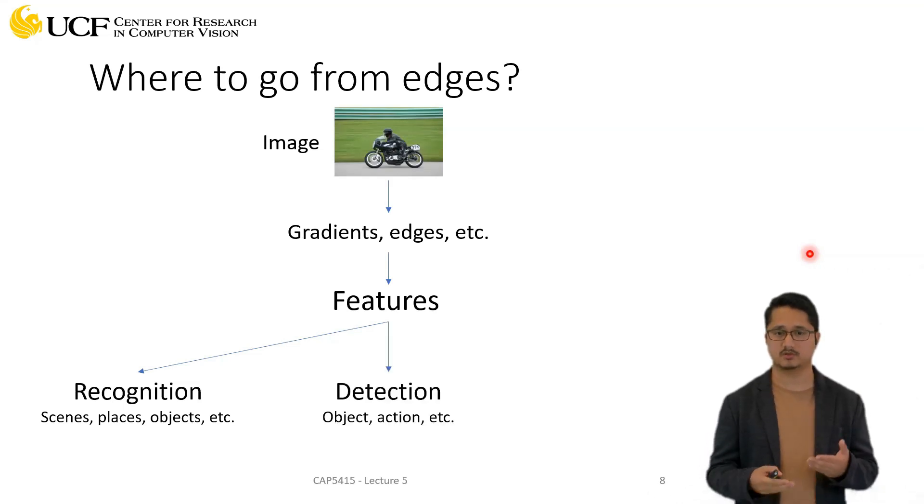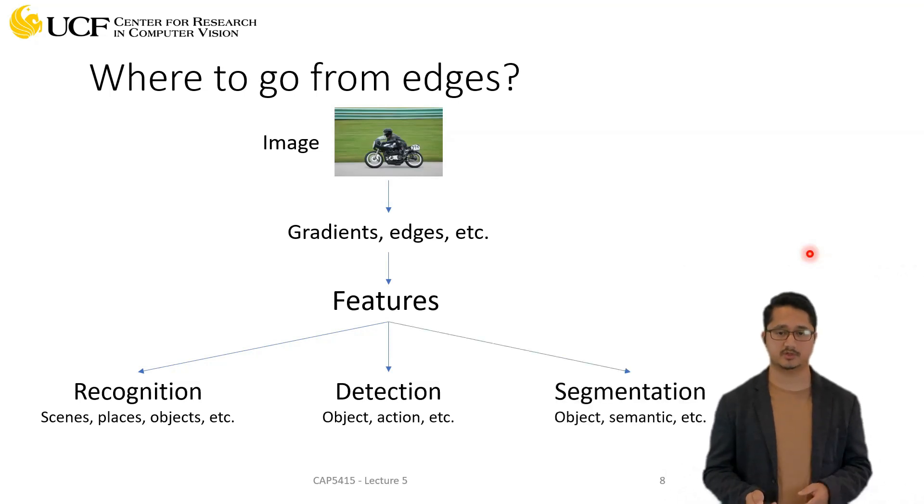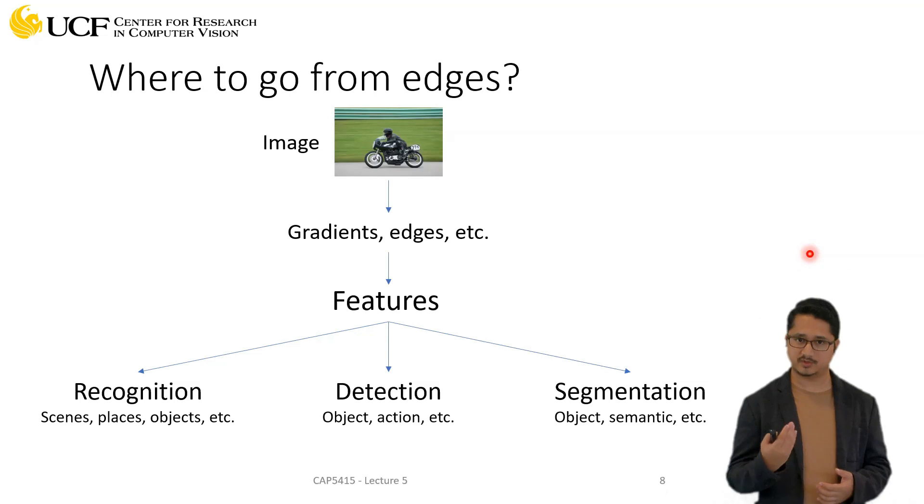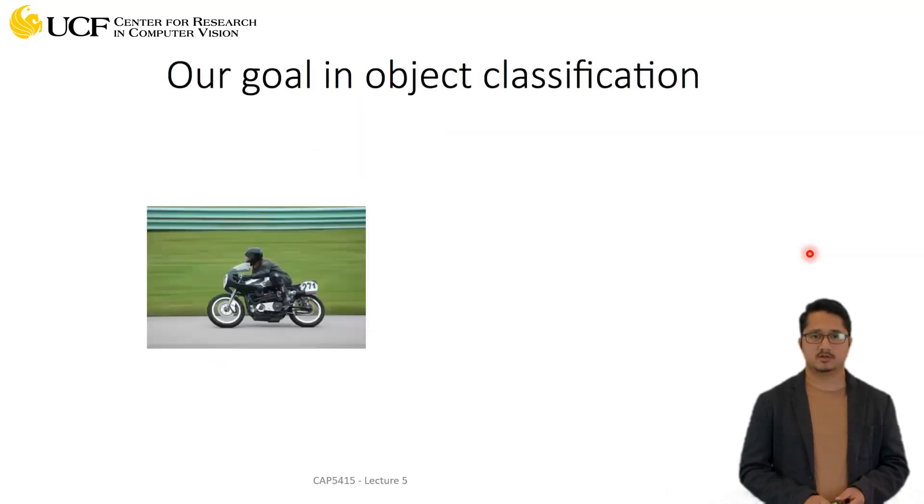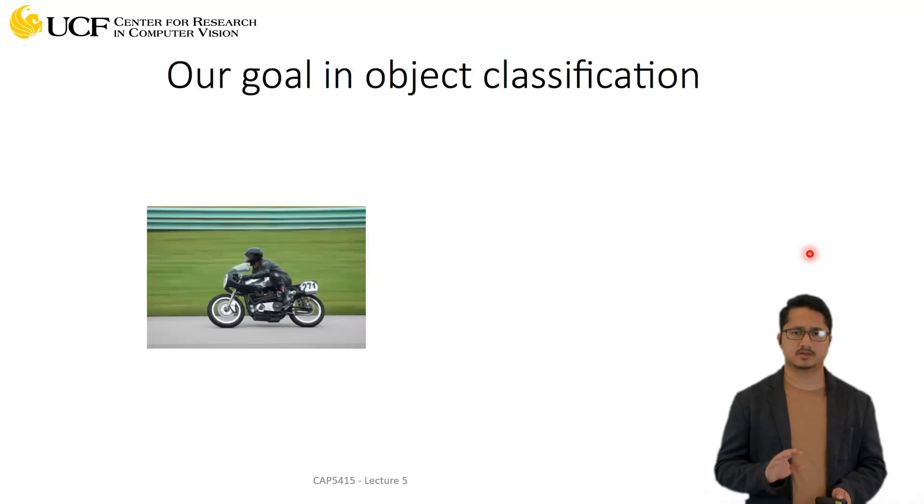If you're doing object detection or action detection, or any other detection tasks, again these features will be useful. It could be segmentation - whatever variation of computer vision problem you have in your application, you will need these features.